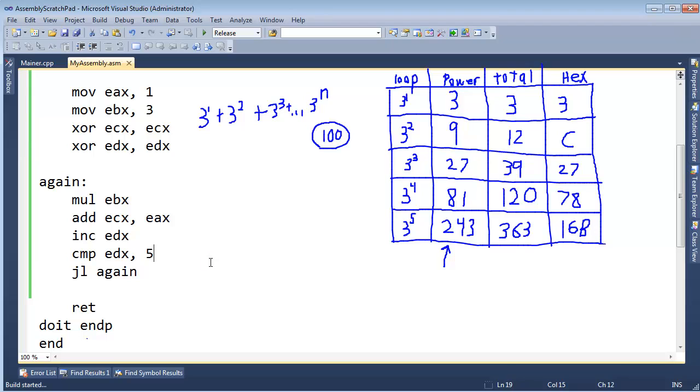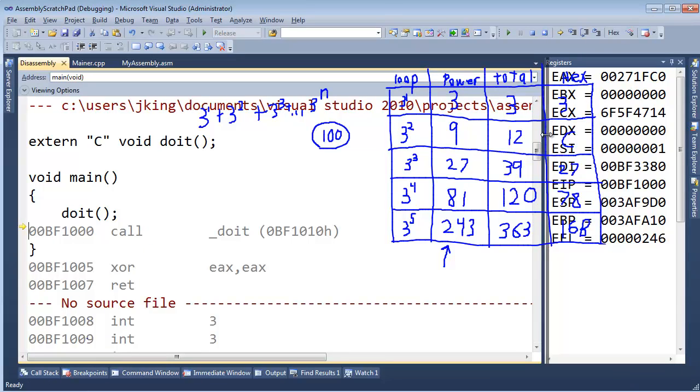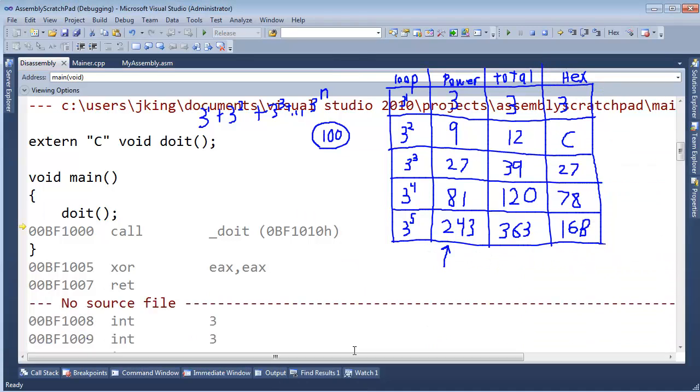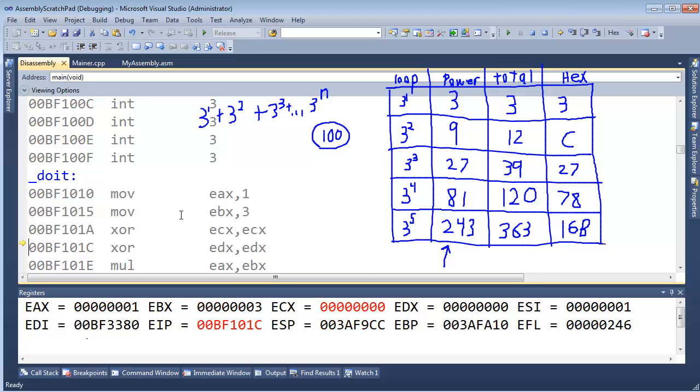All right, let me start the debugger up. F11, CTRL-ALT-D. Oh, look at that, that's frustrating. Can I shrink this? Oh, you know what I could do? We'll put the registers down there.